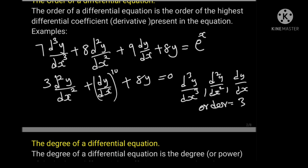Now for the second example, the highest differential coefficient present is d squared y over dx squared. Therefore, the order of this one is equal to 2.